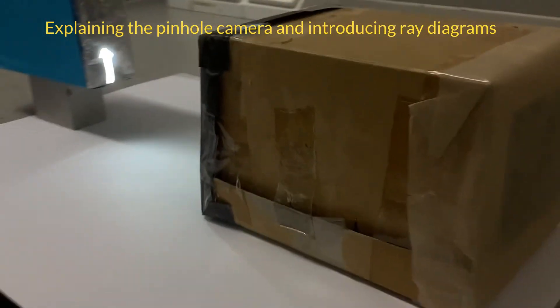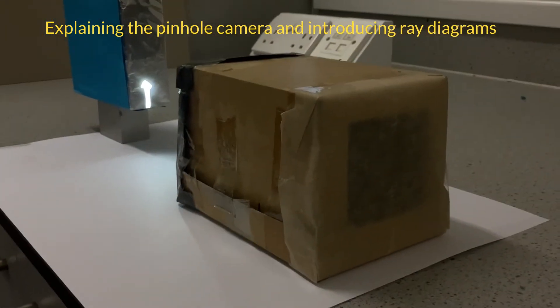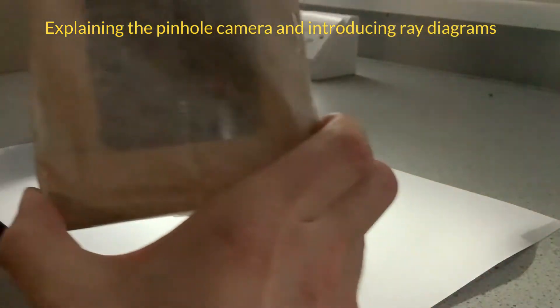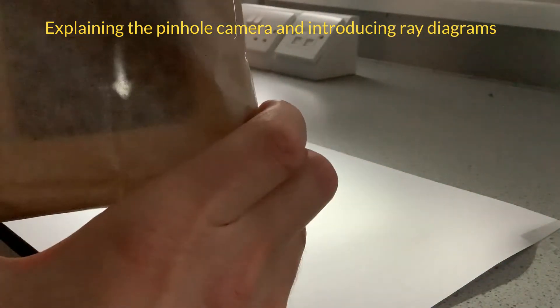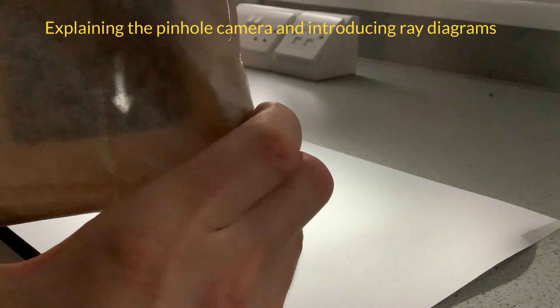And then it's a box, and at the back, I've got a thin piece of greaseproof paper or tracing paper, and if I hold it up, we can see the image formed.